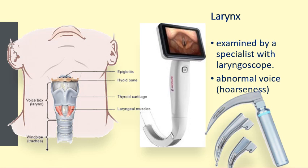Examination of the larynx is done by an expert using a laryngoscope, an instrument used to visualize the larynx. A laryngoscope with a curved blade is used for intubation when inserting an endotracheal tube. A videolaryngoscope allows the doctor to visualize the larynx from a camera without being near the patient — especially useful during COVID-19 to maintain a reasonable distance.